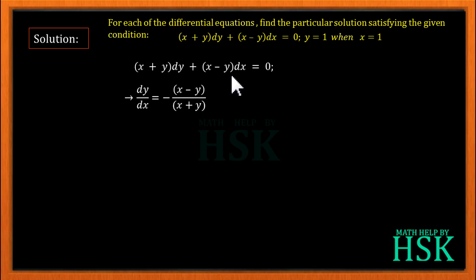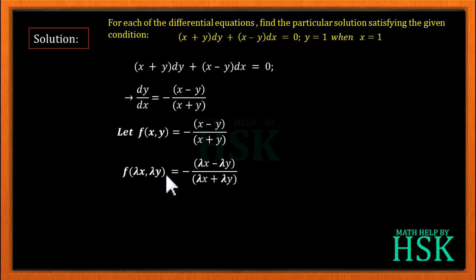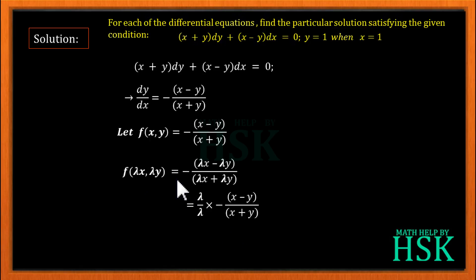A minus sign is obtained when the positive term goes to the right hand side. The differential equation is now written as dy/dx = -(x - y)/(x + y). We write f(x, y) equal to this right hand side. Now we calculate f(λx, λy) by simply replacing x with λx and y with λy.